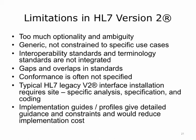HL7 version 2 has limitations. There are too many options and ambiguity in the specifications. It is too generic — intended to work with a wide variety of use cases instead of being fully constrained to work for specific use cases. It is not well integrated with terminology standards. There are gaps in functionality as well as overlaps with the functionality of other standards, and conformance is not often well specified. As a result, to make two systems interoperable when both use HL7 version 2 requires site-specific analysis, specification, and coding. When implementing HL7 version 2, the implementer should ideally implement an HL7v2 implementation guide or profile, which gives detailed guidance and constraints and would reduce implementation variance and cost.